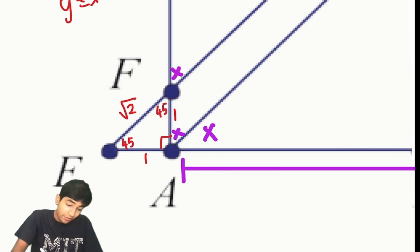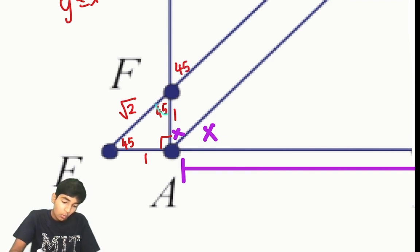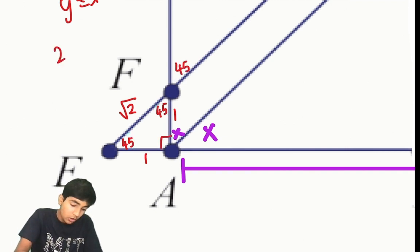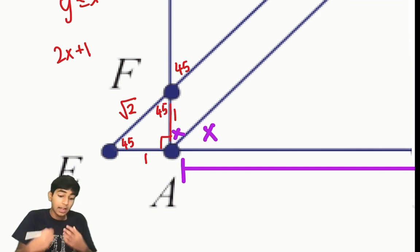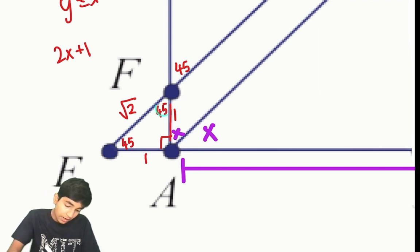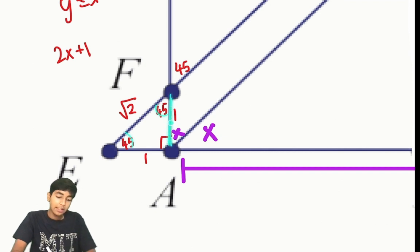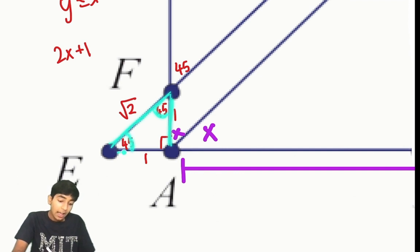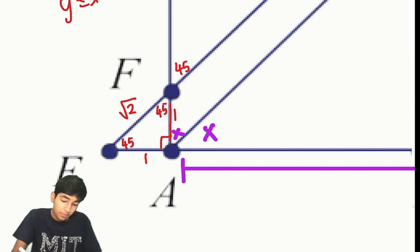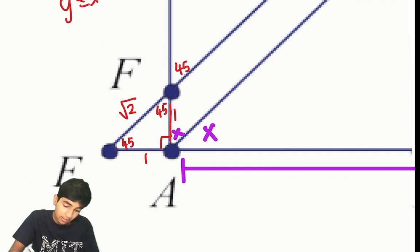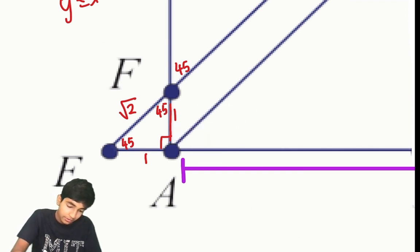We know x is 45 degrees. Because it's an isosceles triangle, the two base angles are equal, and since one side is 1 and the hypotenuse is root 2, it has to be a 45-45-90 triangle. So all the x's in the diagram are 45 degrees. We've already gained so much valuable information.